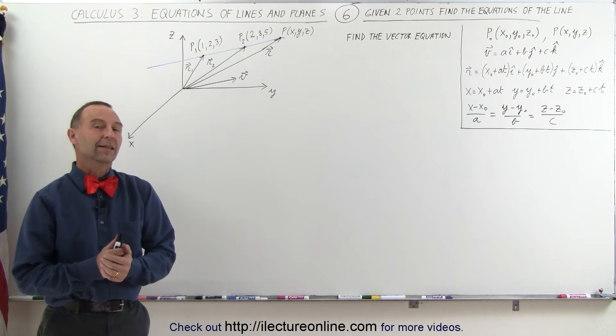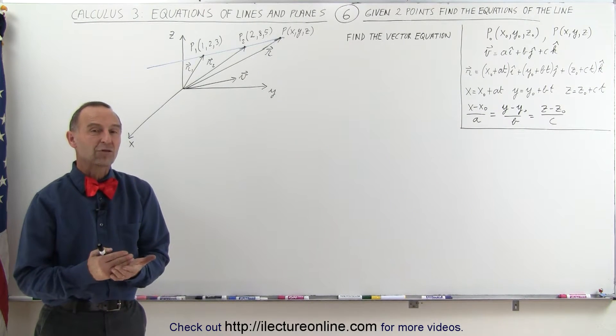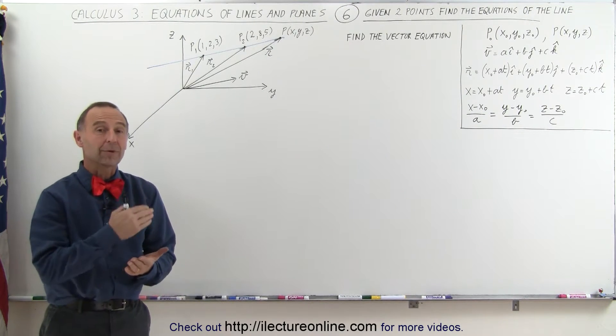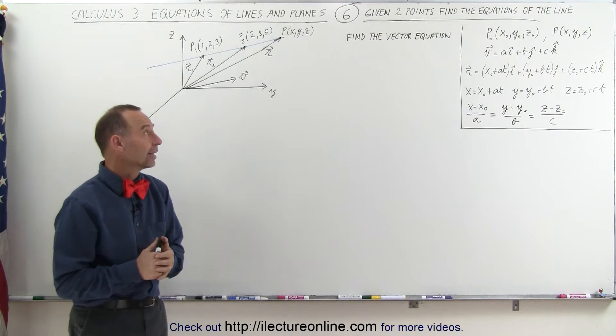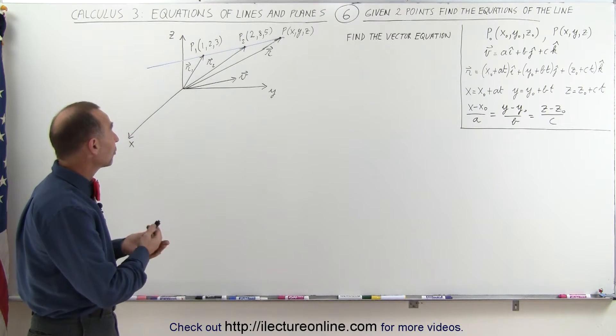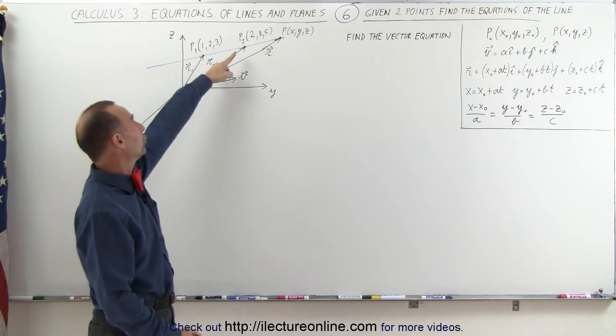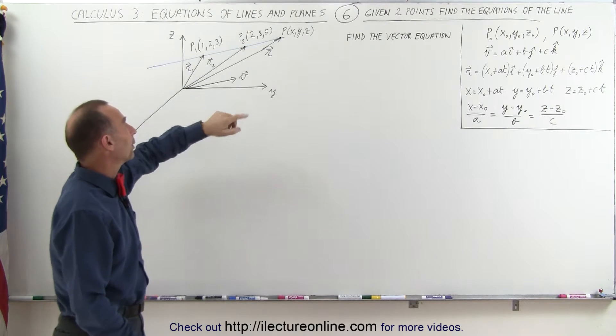Welcome to Electron Line. Now let's find the vector equation of an example line. Here we have a line that has two points on it, point 1 and point 2, and they're known.